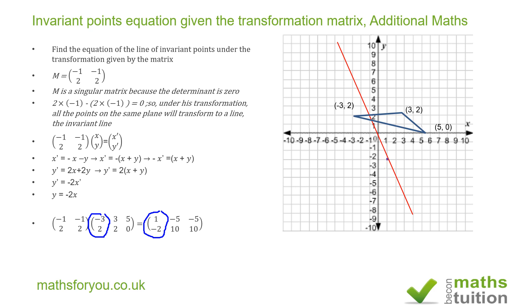So this point (1, 2) is on the line there. Similarly, the point (3, 2) will now transform to (-5, 10). So this point transforms to that, and (-5, 10) is there.